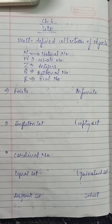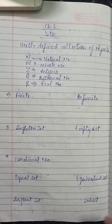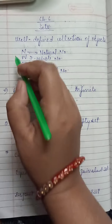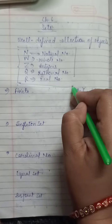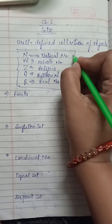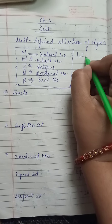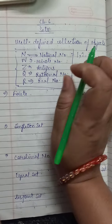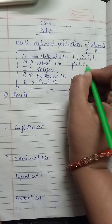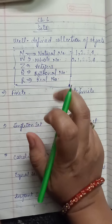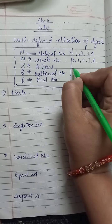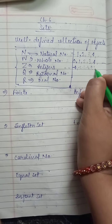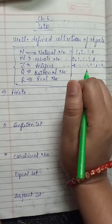So a set is the well-defined collection of objects — when the collection can be defined, only then it is called a set. Sets are basically of two types: finite and infinite. Before explaining finite and infinite, let me explain the symbols for some number sets. N means natural numbers — it begins from 1, all positive numbers: 1, 2, 3, 4... Whole numbers are exactly the same as natural numbers but zero is also included. Integers contain all positive as well as negative numbers: ...−4, −3, −2, −1, 0, 1, 2, 3, 4...